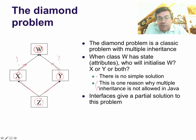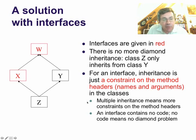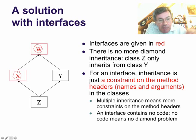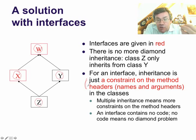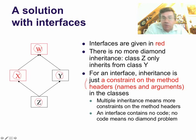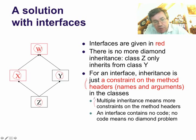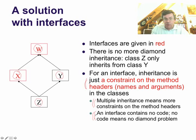Because of this and for other reasons, multiple inheritance is not allowed in Java. So how do interfaces help here? Here's an example where W and X are interfaces, not classes. This is the same diamond shape, but there is no more diamond inheritance problem because class Z only inherits from Y — that's the only class inheritance. For an interface, inheritance is just a constraint on the method headers. X and W just give constraints for Z and Y, meaning Z and Y just have to have certain methods with certain arguments. Since an interface contains no code, there is no diamond problem.